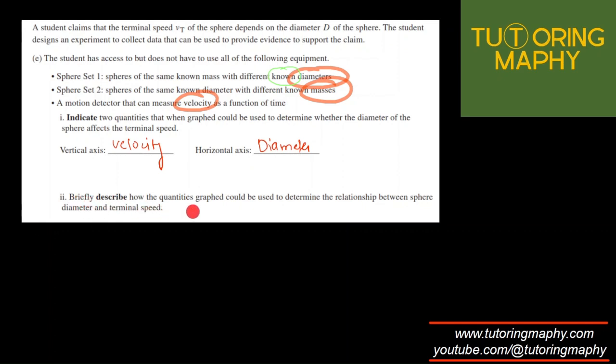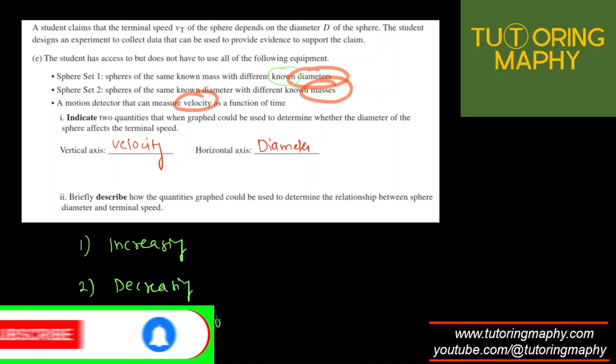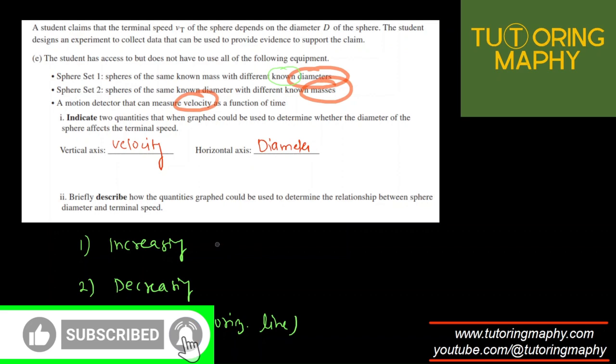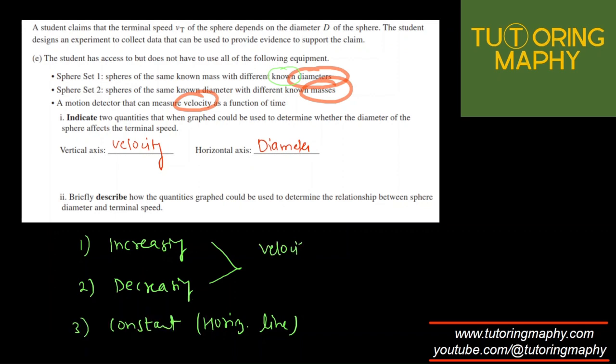Now describe briefly how the quantities graph could be used to determine the relationship between sphere diameter and velocity. Well, it depends on the graph. So for example, there could be only three scenarios. Either the graph can be increasing in nature or the graph can be decreasing in nature or the graph is constant, a constant horizontal line or almost like a horizontal line because that's an experiment. If these two things happen, then definitely they are dependent on each other. Or to be more specific, velocity is dependent on diameter. But if the velocity versus diameter curve comes out to be a horizontal line, then obviously the velocity is going to be independent of it. This is how we can use the curve to interpret.